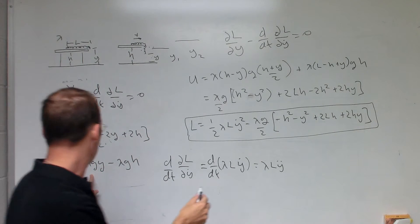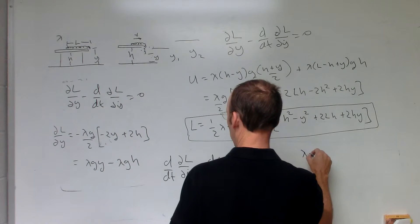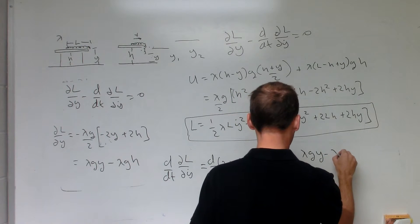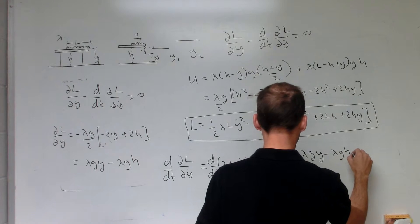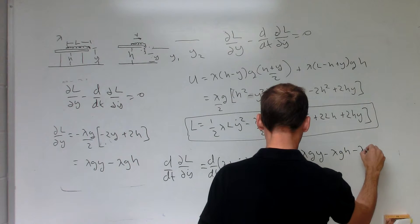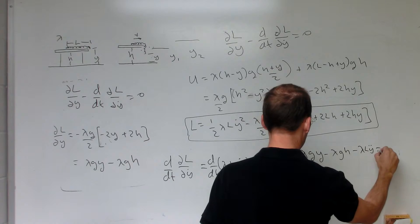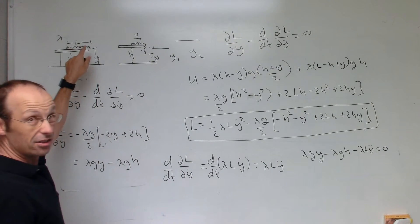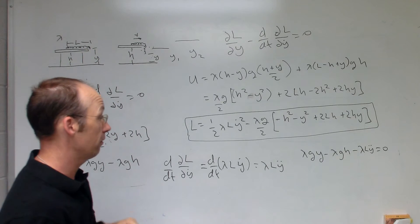And lambda and L are constant. So I just get lambda l y double dot. So now this minus that is equal to zero. So let's write that out. Lambda g y minus lambda g h minus lambda l y double dot equals zero. Okay, the lambda cancels. If it's a uniform density chain, it doesn't really matter what the density is.